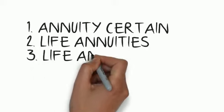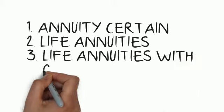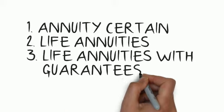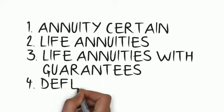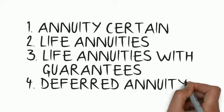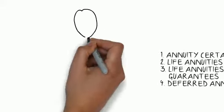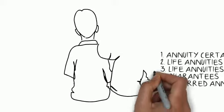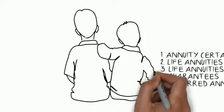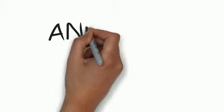Looking at life annuities, you are looking at the single life, the joint life contract, and also the joint life last survivor contract. Or you can look at several different types of contingent annuities. We also go on to look at annuities with guarantees, combining the annuity with guarantees to get a totally different product. We can also look at deferred annuity contracts and retirement annuity contracts.